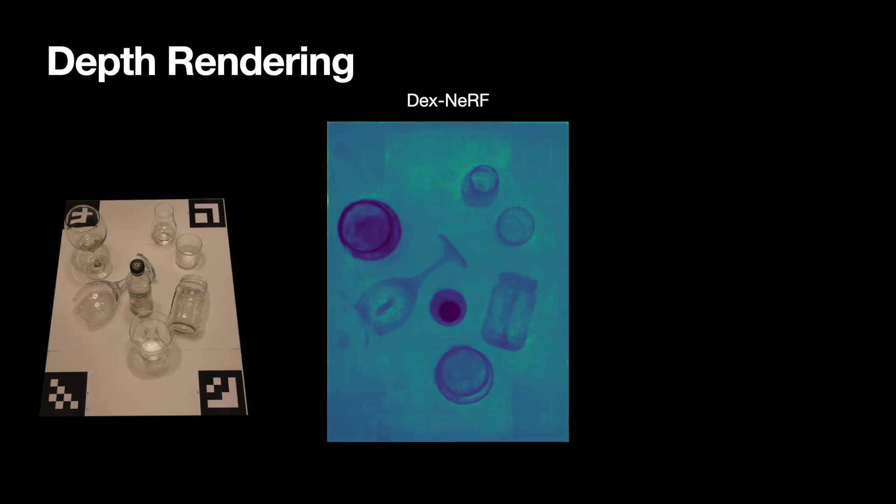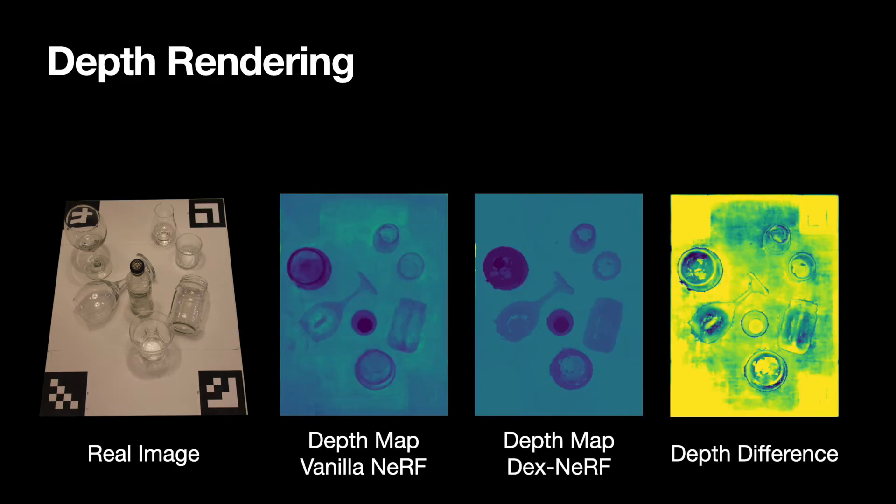In contrast, DEXNERF uses a transparency-aware method that searches the first sample along the ray for which sigma is greater than a threshold. DEXNERF recovers almost all of the depth of transparent surfaces.